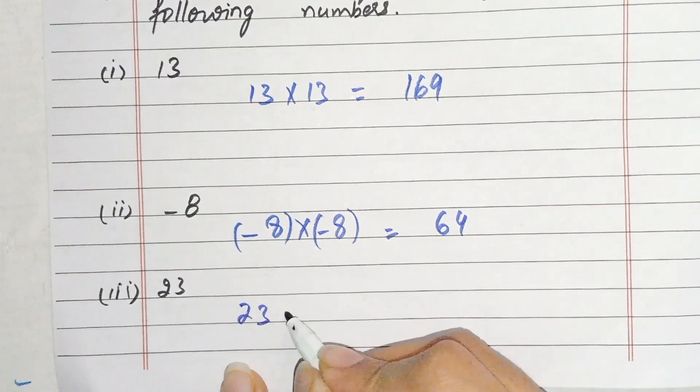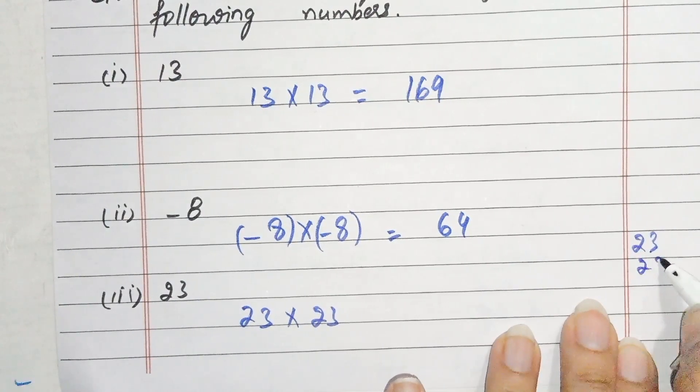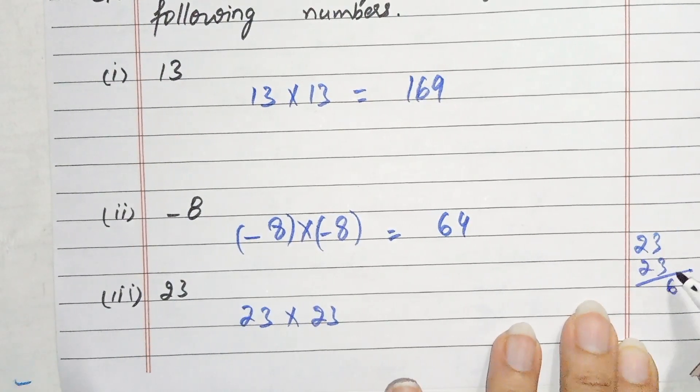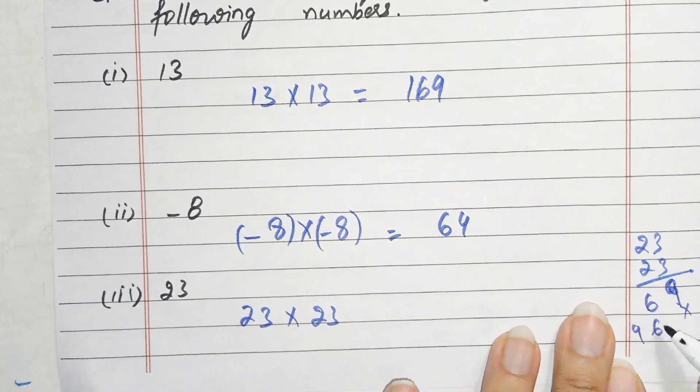Third part we have 23, 23 multiply by 23. 23 multiply by 23, 3 times 3 equals 9, 3 times 2 equals 6, so we get 69.